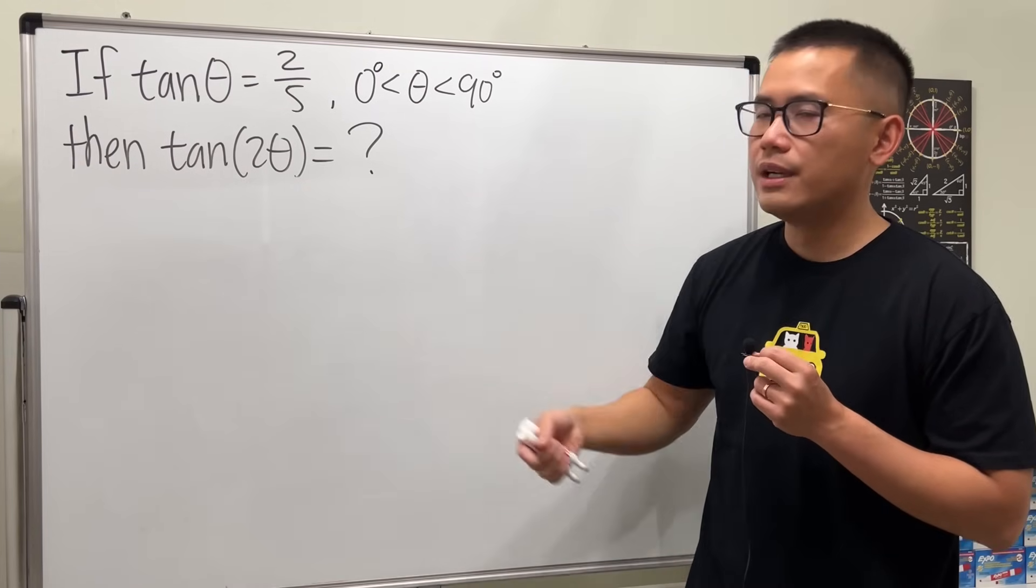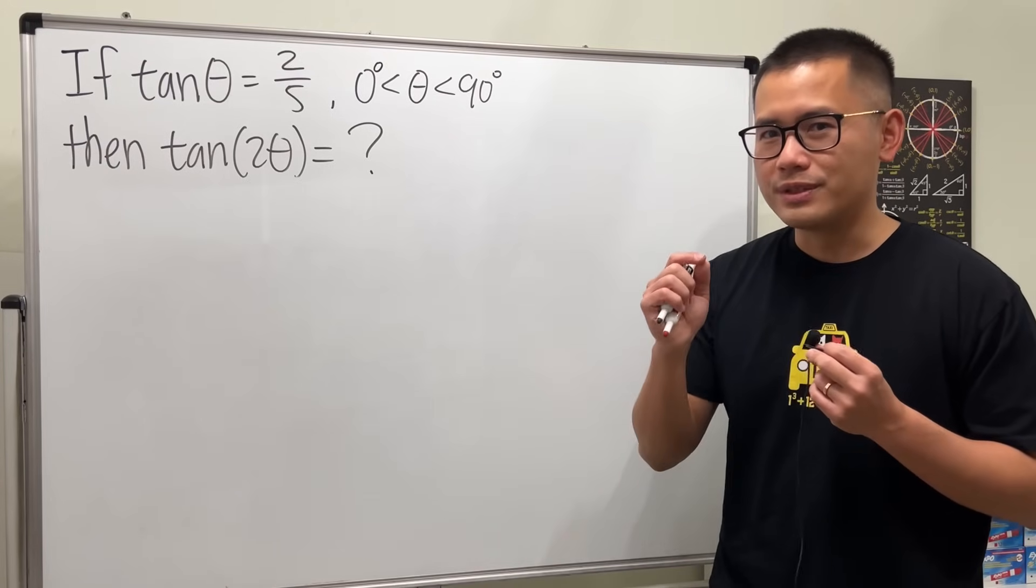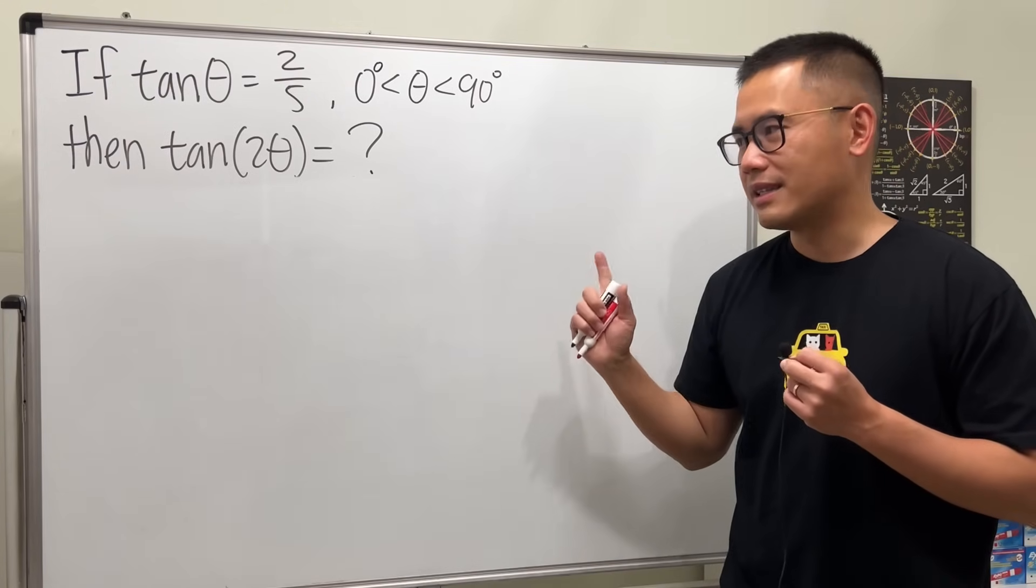I know we can just use the double angle identity for this, but here we will actually try to do this from scratch. We will use the triangle method and you can also make this into a proof for the general case, so I think that's beneficial.